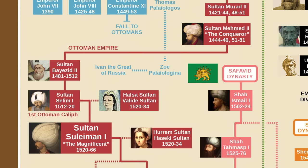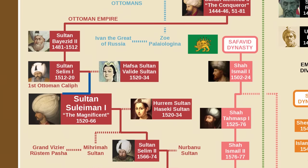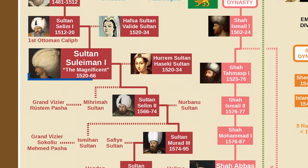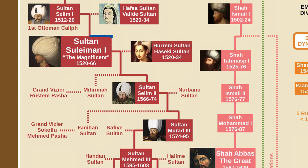Selim expanded the empire into Asia and Africa. He conquered Syria, Arabia, Mesopotamia and Egypt. In Egypt, the Abbasid Caliph was a figurehead from whom Selim took the title of Caliph, hence becoming the first Ottoman Caliph — also the first Caliph who wasn't from Prophet Muhammad's tribe. His son and successor was the famous Suleiman I, or Suleiman the Magnificent or Suleiman the Lawgiver. He is famous for his rivalry with the Habsburgs, especially Charles V, another great monarch of Europe.